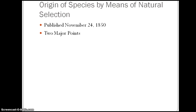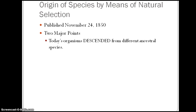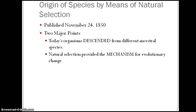There were two major points to his book. Number one: today's organisms descended from a different ancestral species. These species didn't change based on whether they used or disused different characteristics, but descended based on what characteristics were best fit for the environment they were living in — those with the best characteristics were going to survive. The second point was that natural selection provided the mechanism for evolutionary change. Natural selection was Darwin's mechanism for change.